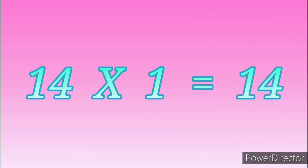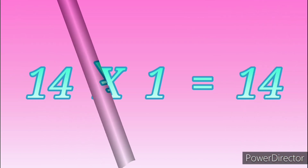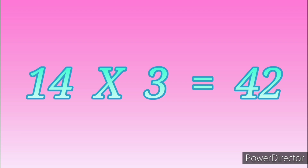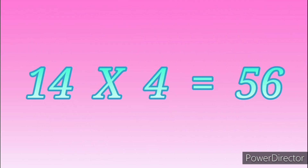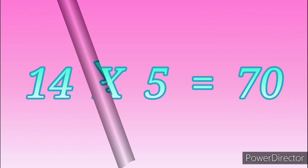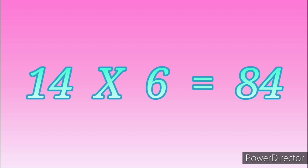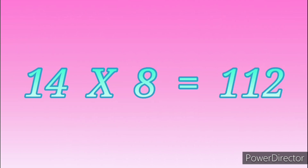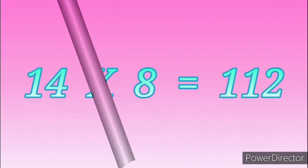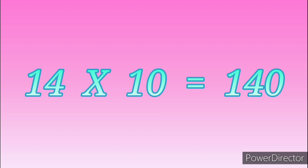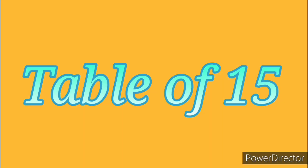Table of Fourteen: 14 ones are 14, 14 twos are 28, 14 threes are 42, 14 fours are 56, 14 fives are 70, 14 sixes are 84, 14 sevens are 98, 14 eights are 112, 14 nines are 126, 14 tens are 140.